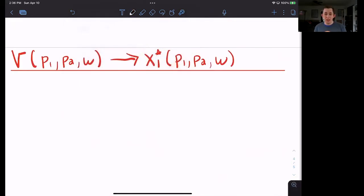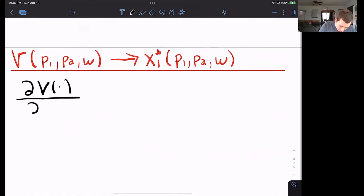So let's start from the indirect utility function and go to the Marshallian demand. So all I'm going to do is I'm going to take the derivative of our value function, of our indirect utility, with respect to p1. Now I'm going to do the total derivative first, and then we'll use the envelope theorem to cancel indirect effects. So the total derivative of the indirect utility with respect to p1...